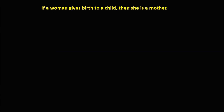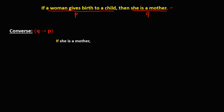Given this conditional statement: if a woman gives birth to a child, then she is a mother. From this conditional statement, this one is P and she is a mother is Q. To write the converse, that's Q implies P. Therefore, if she is a mother, then a woman gives birth to a child. So this is now the converse of this conditional statement.